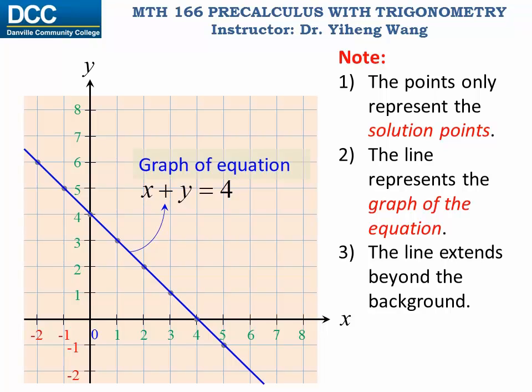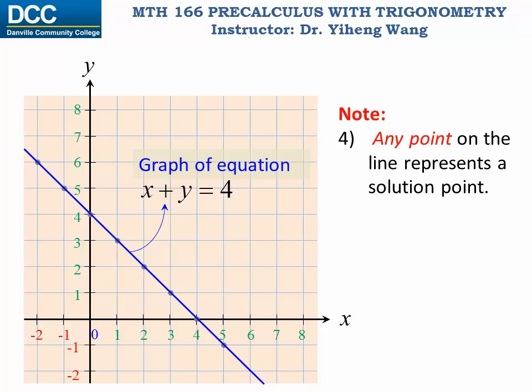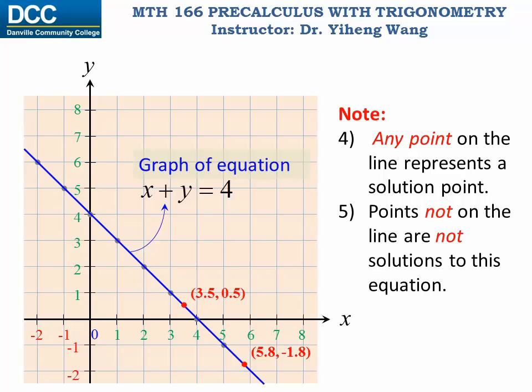In fact, in this case it extends to both positive and negative infinity. Of course it won't fit inside this slide, and also it is not necessary to graph it that way. And any point on this line, even those that we didn't calculate earlier, represents a solution point to the equation. For example, if we could read the coordinates of this point, or this point, we can easily tell that these pairs of x-y coordinates also satisfy the equation. And lastly, obviously any point not on the line is not a solution point to this equation.